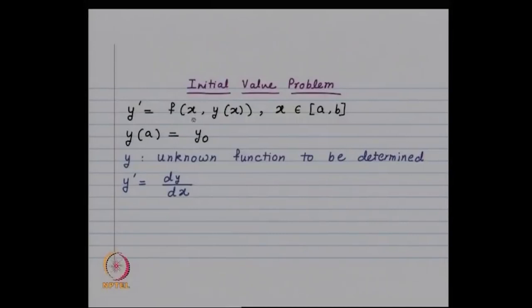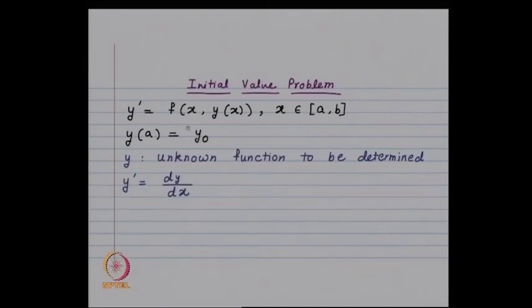I will first state a theorem which tells us about the existence and uniqueness of the solution, and then we will define Euler's method. Here is the initial value problem: y' = f(x, y), x varying over [a, b], and y(a) = y₀. This is the initial condition. The unknown is the function y; the notation y' = dy/dx. f is given to us and we want to find y satisfying this differential equation.